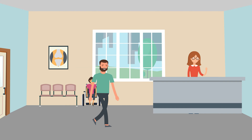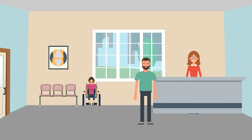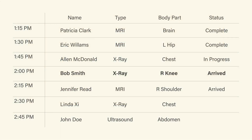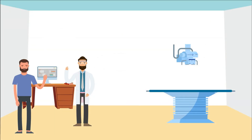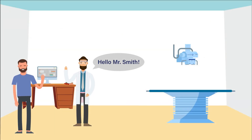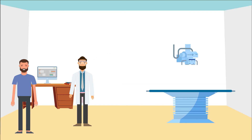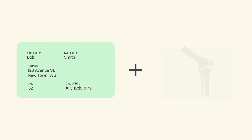The next day, Bob arrived at the imaging center and walked to reception. Zara was expecting him. She was able to see in the system when the technologist was ready to see him. The technologist, Adil, greeted Bob by name because the RIS shared Bob's information into the system. When the study took place, the RIS added Bob's information into the images that were taken, to be able to identify his studies and avoid confusion.